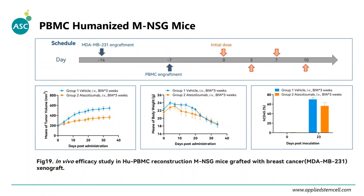Another case study uses our humanized PBMC mouse model engrafted with breast cancer and treated with a specific human anti-PD-L1 immune checkpoint antibody. Compared to the vehicle control, anti-PD-L1 can significantly inhibit tumor growth, with a significant difference compared to the vehicle control group. This demonstrates that PBMC-humanized NSG mice are useful for testing antibody efficacy, specifically in immuno-oncology research.